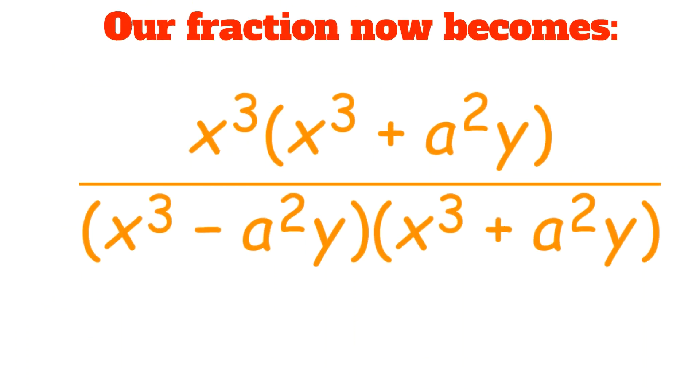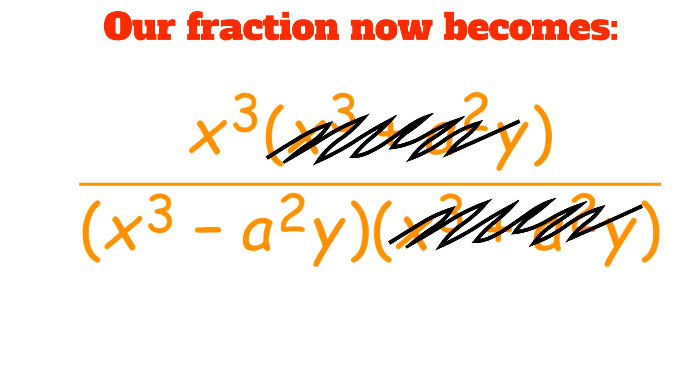Our fraction now becomes x cubed times x cubed plus a squared times y. And on the bottom, we have x cubed minus a squared times y times x cubed plus a squared times y. We notice that two of these terms are the same so that they cancel out, namely x cubed plus a squared times y.